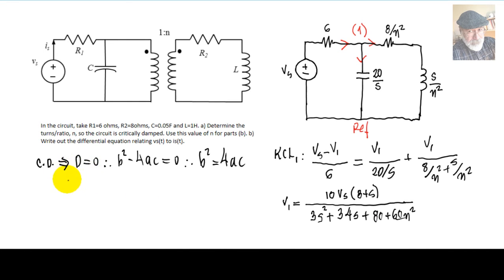Critically damped, the discriminant of the characteristic equation specified by this denominator has to be 0. B square minus 4AC has to be 0. That means B square has to be equal to 4AC. Who is B? B is 34. And A is 3.